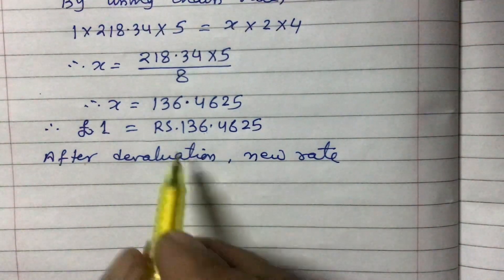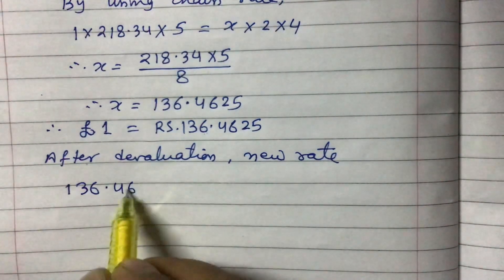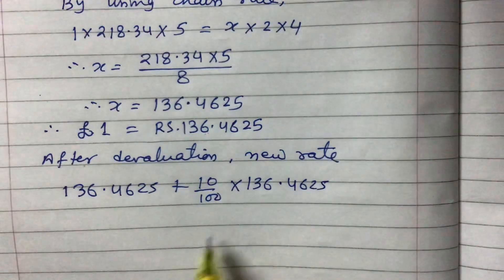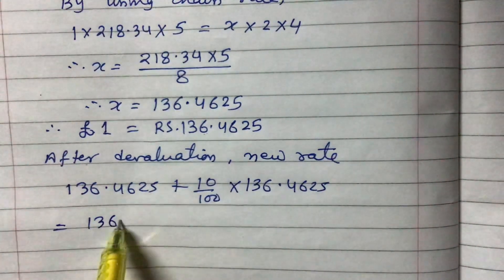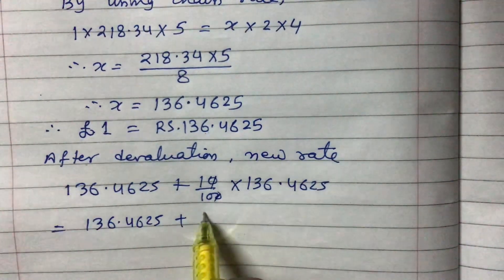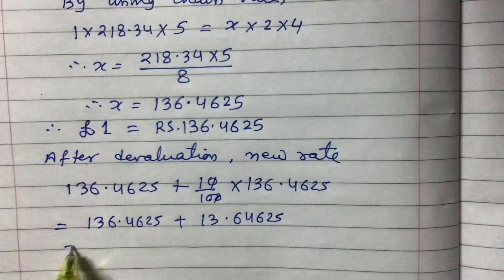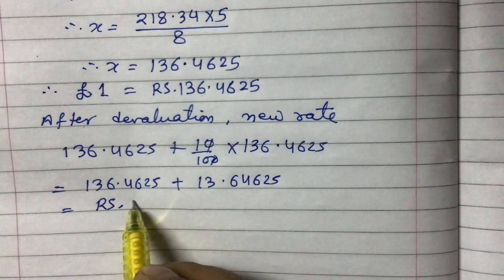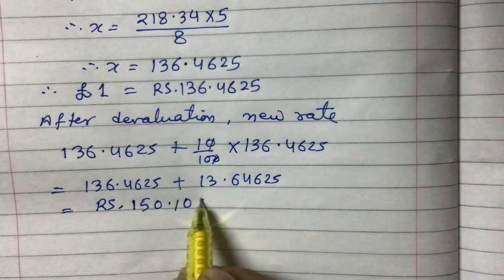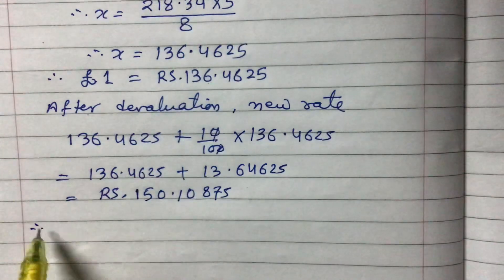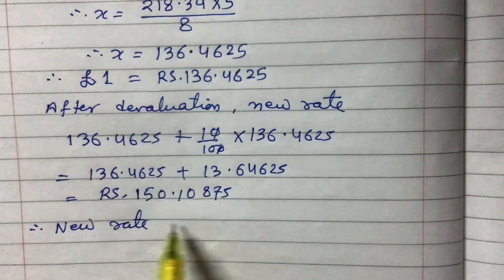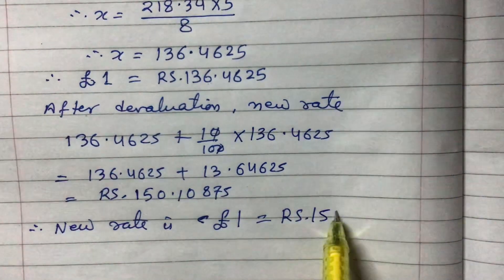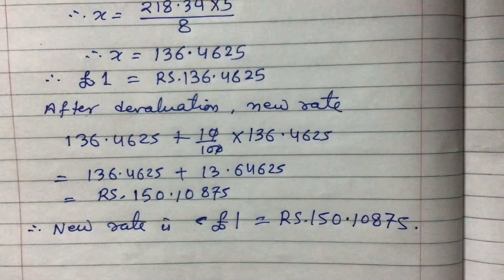The new rate is calculated as: 136.4625 plus 10% of 136.4625, which equals 136.4625 plus 13.64625, giving rupees 150.10875. Therefore, the new rate is pound 1 equals rupees 150.10875.